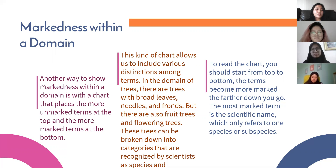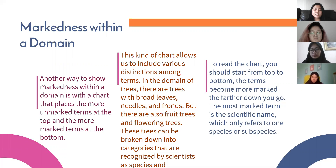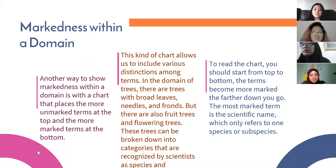The next material is markedness within a domain. One way to show markedness within a domain is with a chart that places the more unmarked terms at the top and the more marked terms at the bottom. In the domain of trees, there are trees with broad leaves, needles, and fronds, as well as fruit trees and flowering trees. These can be broken down into categories recognized by scientists as species and subspecies. The terms become more marked the further down you go, and the most marked term is the scientific name, which refers to only one species or subspecies.